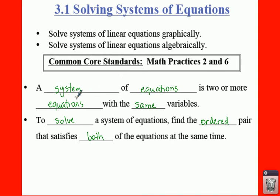So the first bullet here: a system of equations is two or more equations with the same variables. Same variables means like they both have an X and a Y.